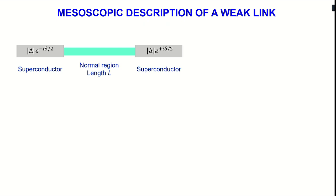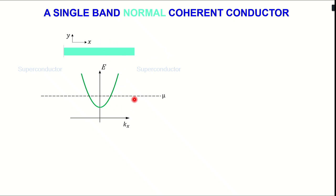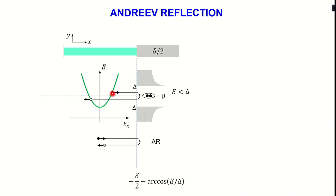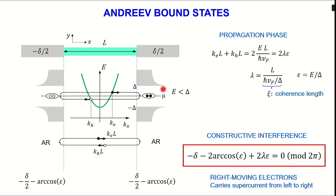Let me give you in detail how we can give a mesoscopic description of a weak link. We consider a normal region of a given length placed between two superconductors with two different phases. The intermediate region is described by a dispersion relation for electrons, and the superconductors have a gap. What happens if an electron comes from the middle part and arrives at the superconductor at an energy below the gap? It cannot enter as an electron, but it can take a second electron and make a Cooper pair — described as having a hole reflected that travels in the opposite direction.